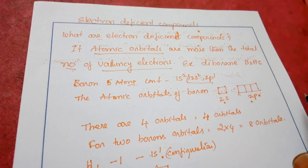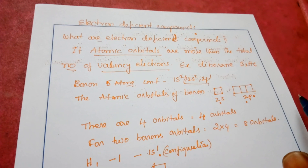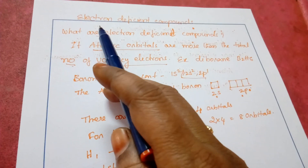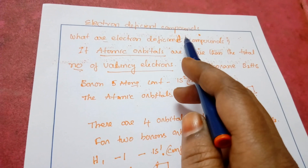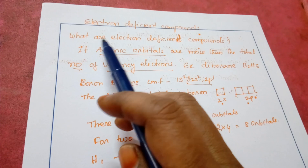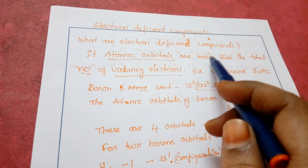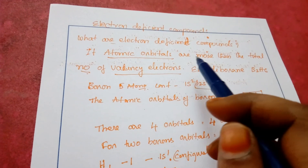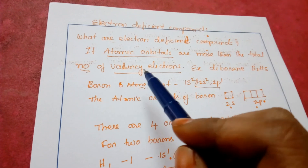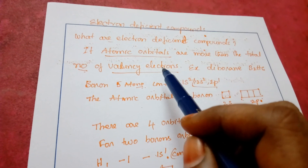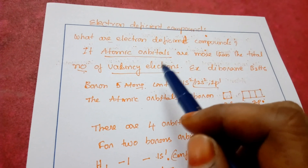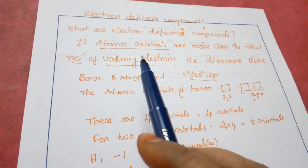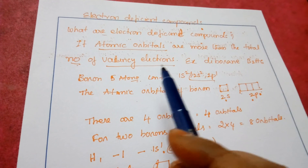In this video, I would like to explain electron deficient compounds. If atomic orbitals are more than the total number of valence shell electrons, then that particular compound is called an electron deficient compound. This will be better understood by taking an example.